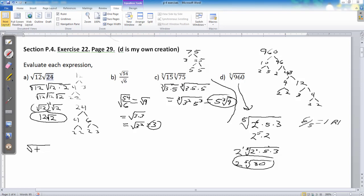So, the roots would be, square root of 12 would be 2 squared times 3, and 24 would be 2 to the third times 3. So, multiply them together, you get the square root of 2 to the fifth times 3 squared.